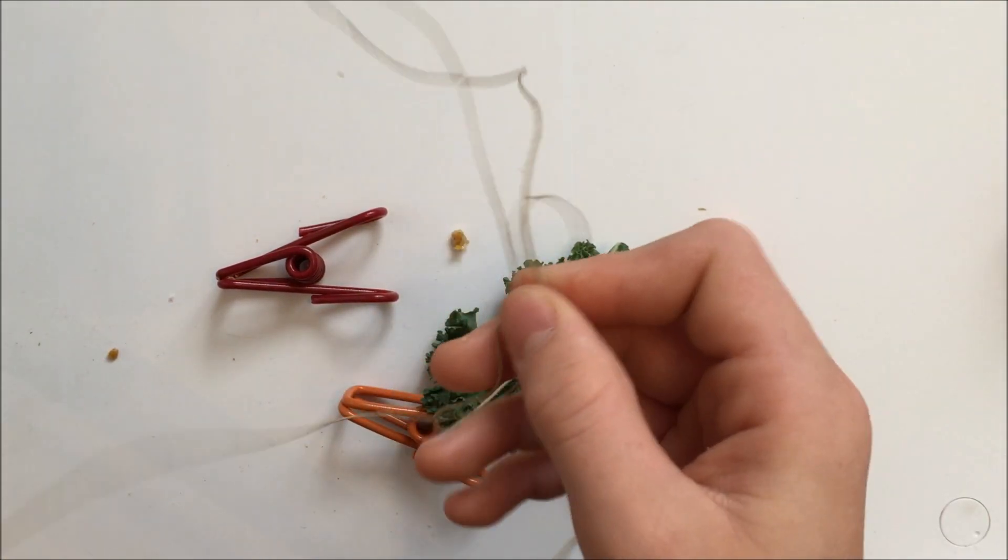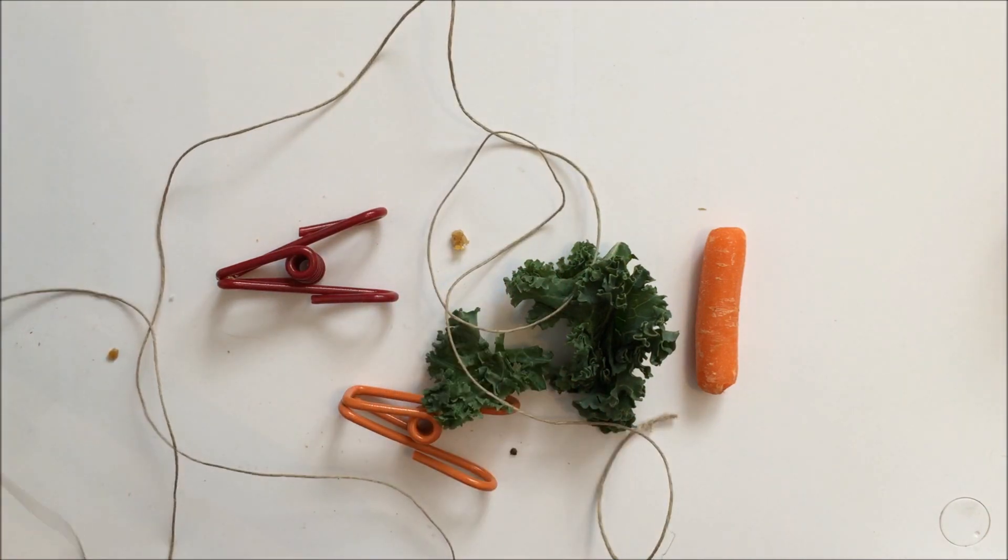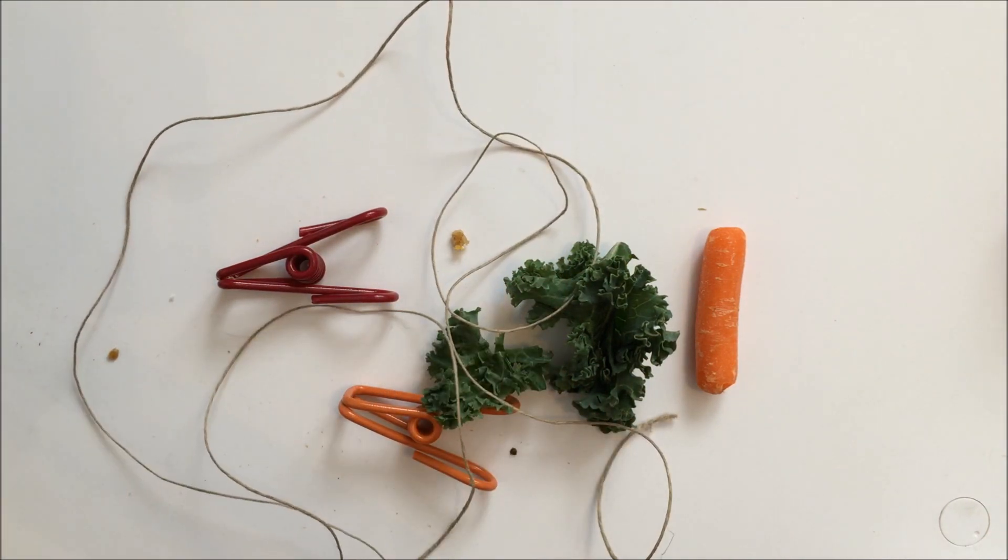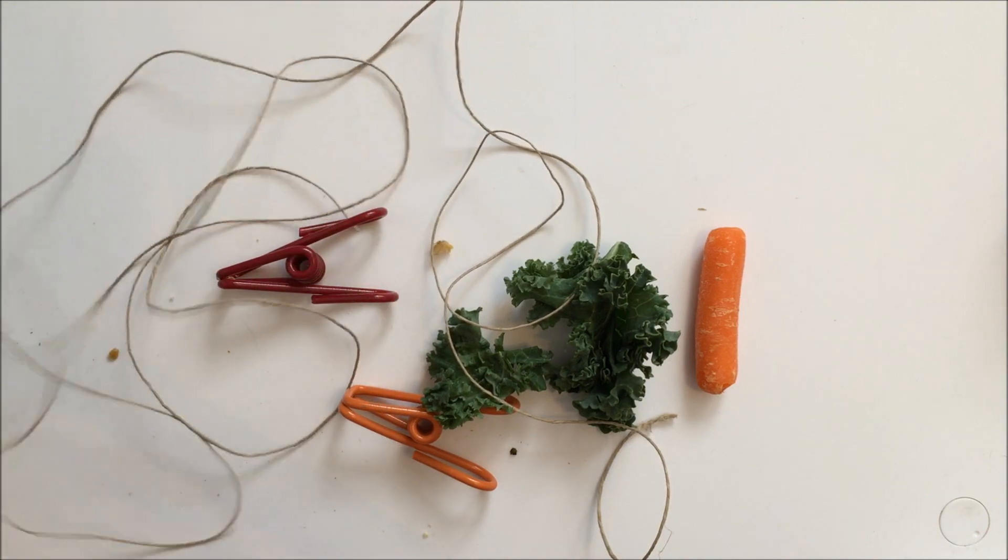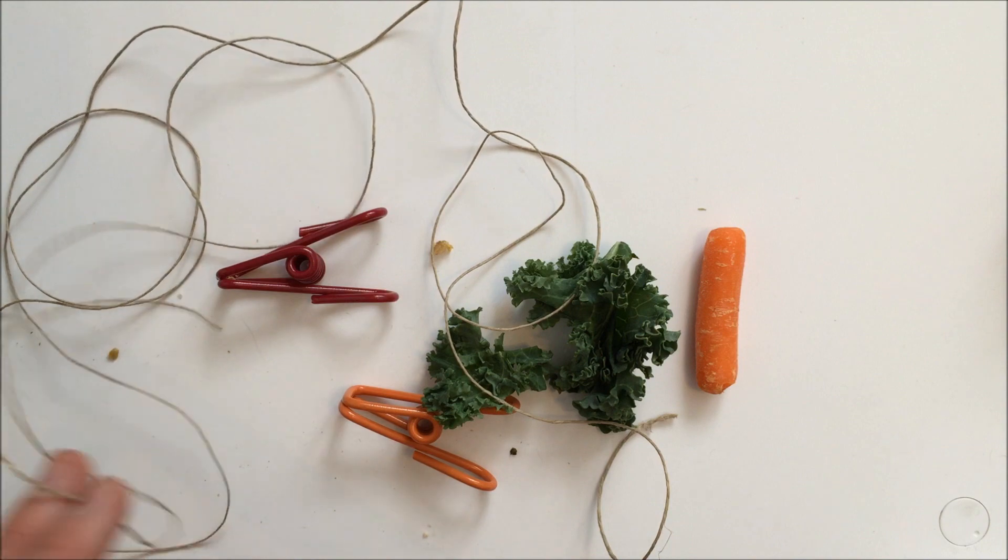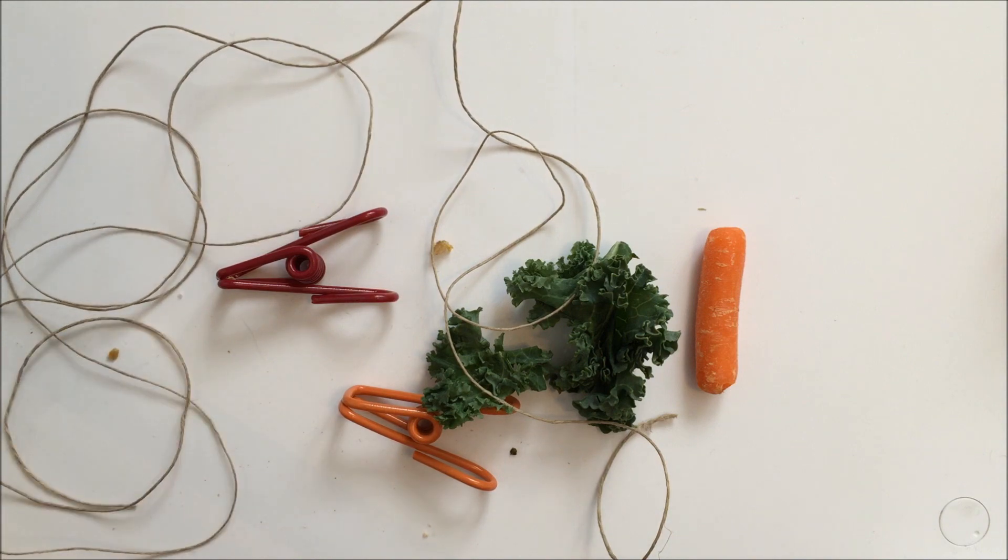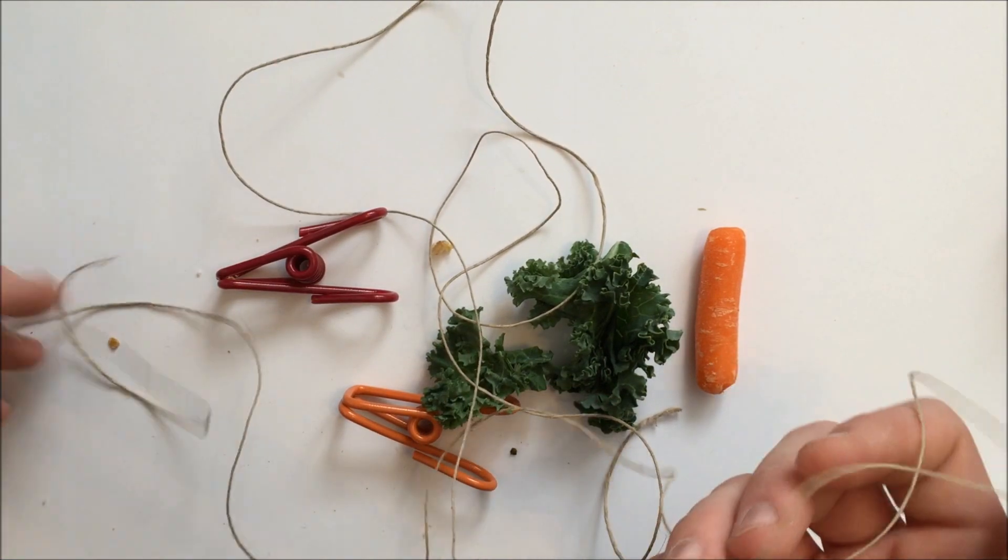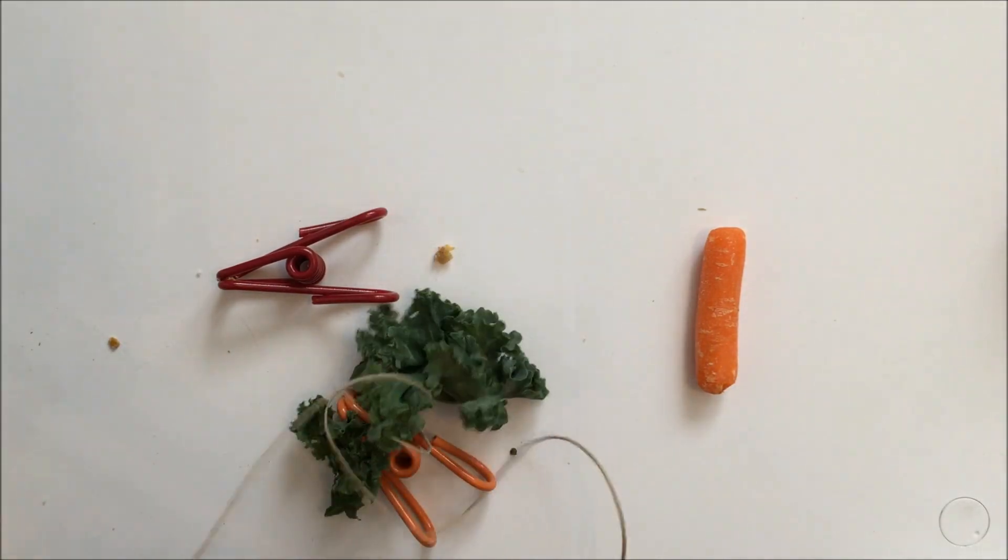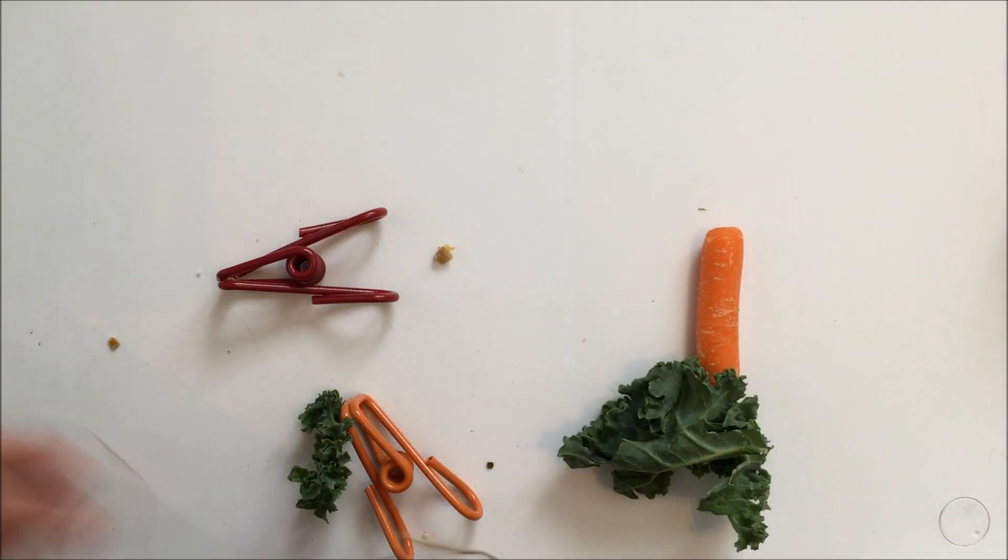And so I have some string here. And you want your string to be long enough to go across a part of your rabbit's cage. And so it depends, it doesn't matter what part of the cage you do. Maybe above the litter box or in the middle or something would be good. So just make your string long enough to go across your rabbit's cage. And then what you're going to do is tie it to each end.